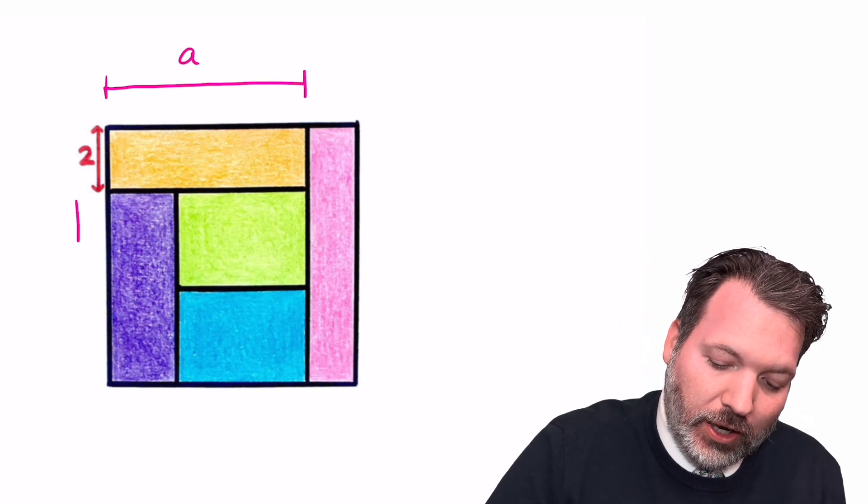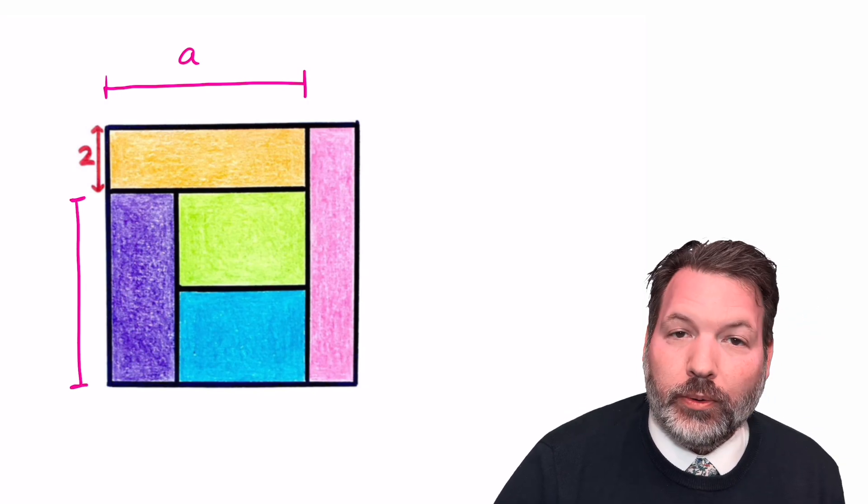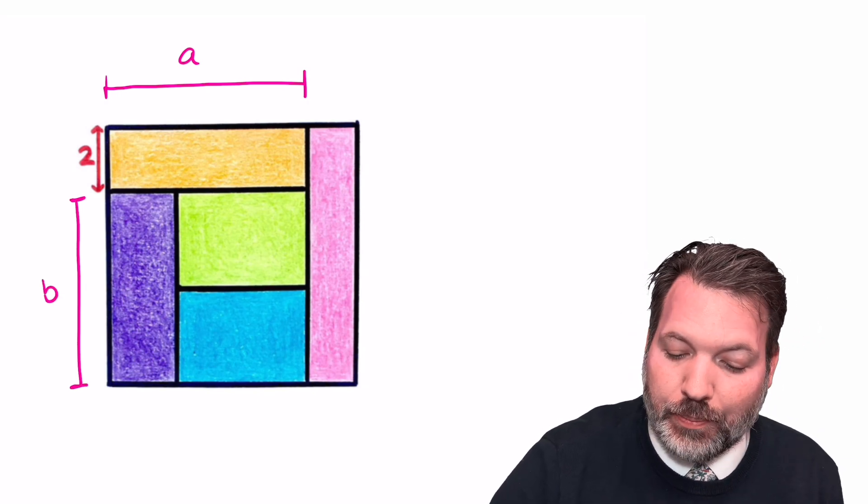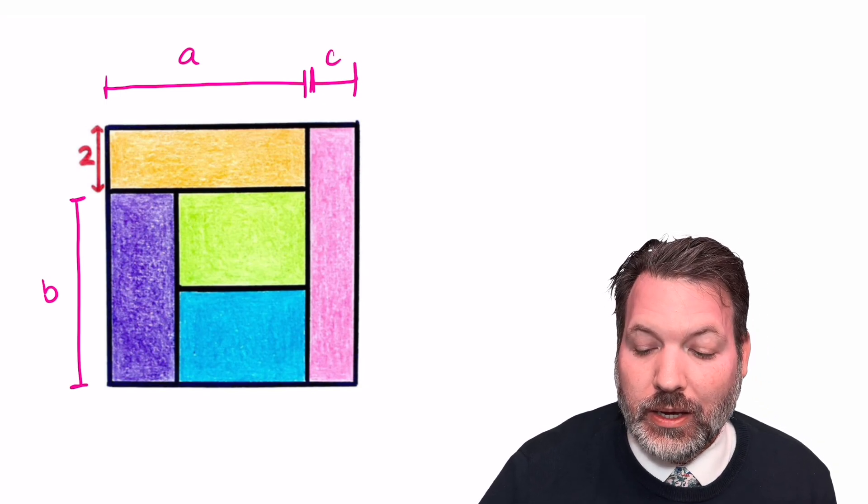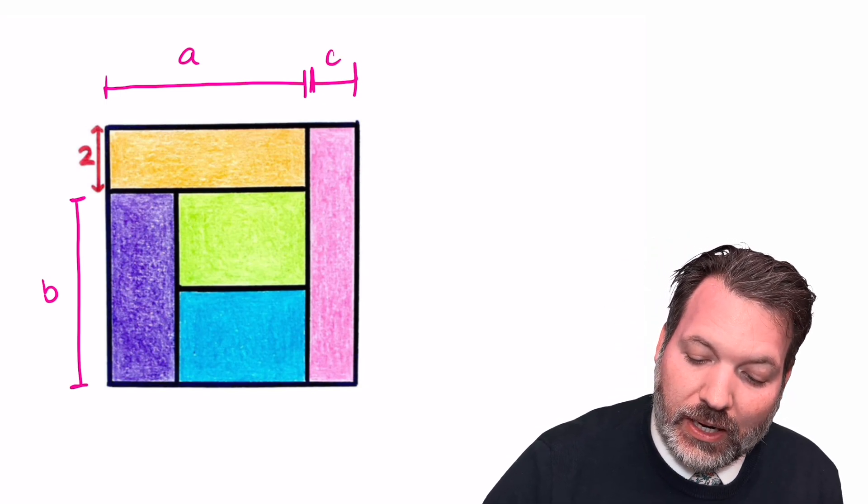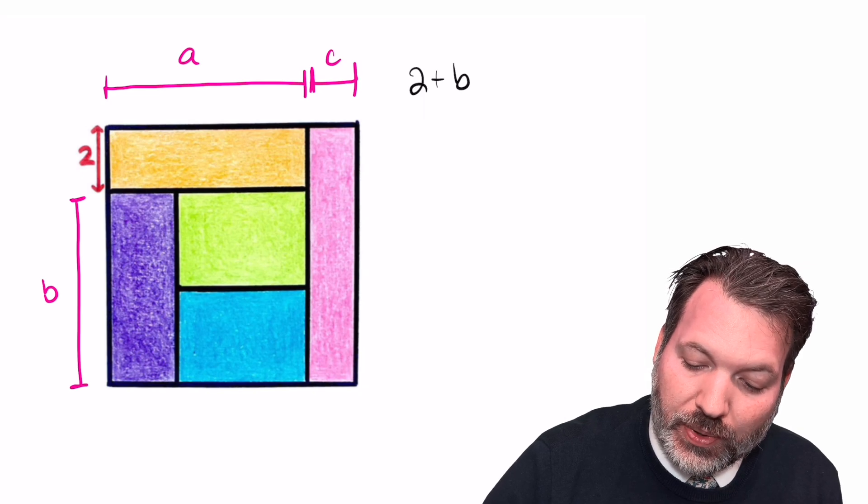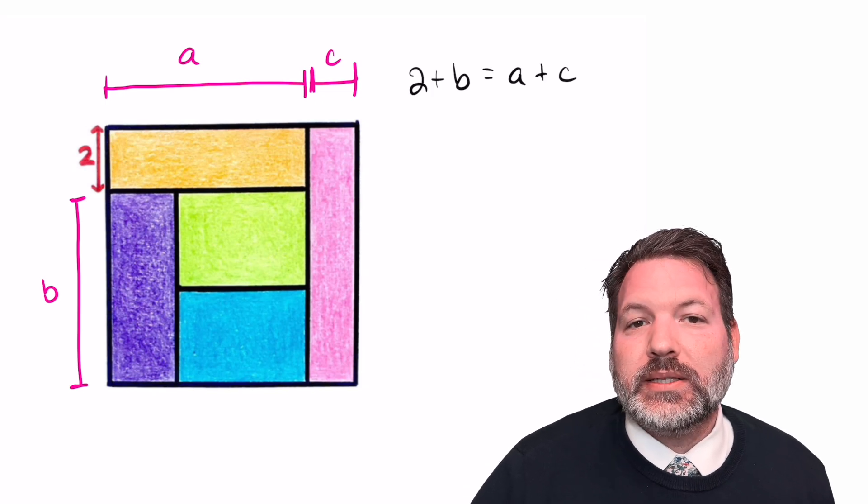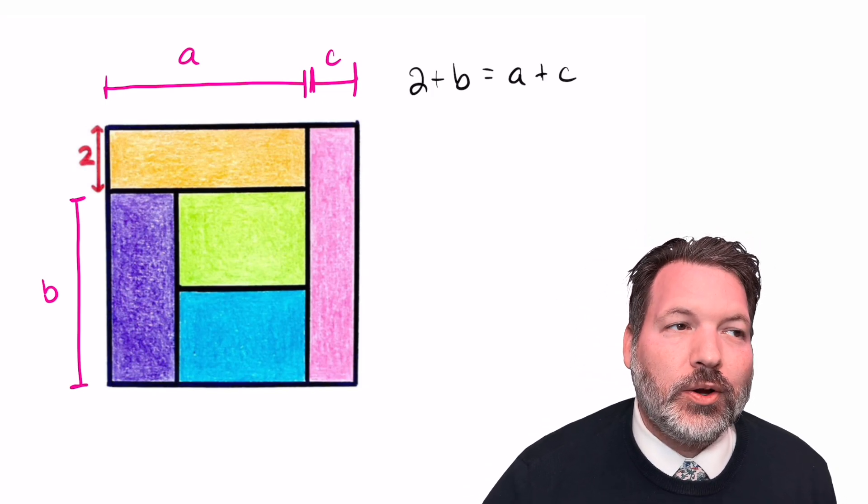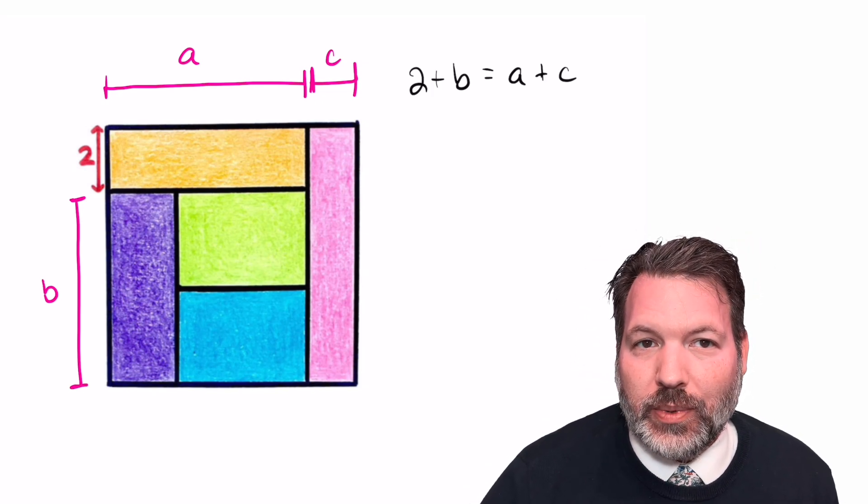We can call this one a, going up and down from that length we already know of two. We can call that b, and then finishing out our left to right length, we can call that c. One thing we can do right away is state an equality: 2 plus b is equal to a plus c. That's interesting. We might come back to that later, but honestly, that equality is not as interesting to me as the equality between all the areas of these rectangles.